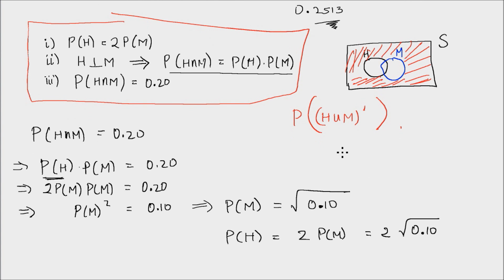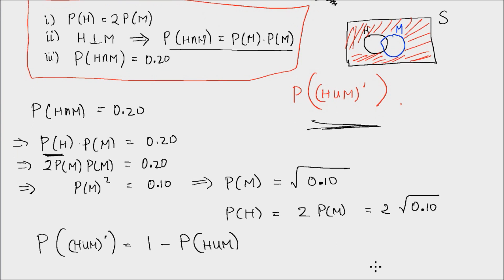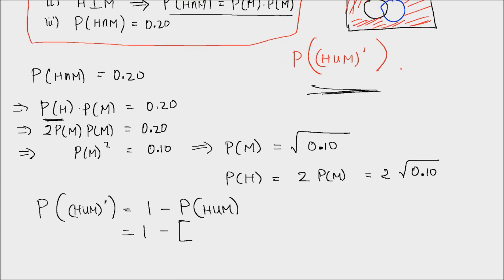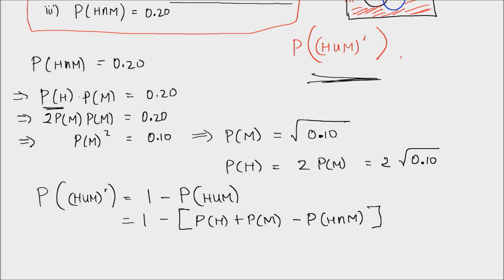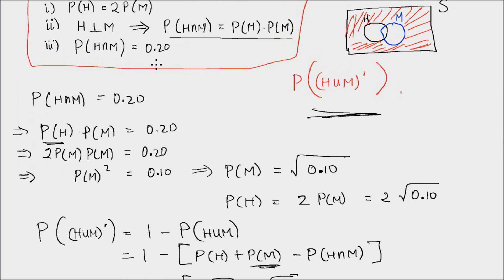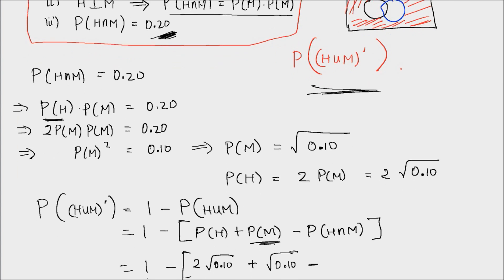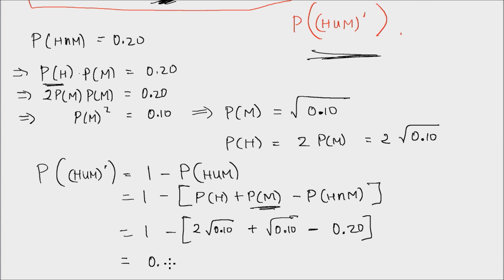Now I can go ahead and find this probability. The probability of (H ∪ M) complement is equal to 1 minus the probability of H ∪ M. Using the inclusion-exclusion principle, that gives me 1 minus [P(H) plus P(M) minus P(H ∩ M)]. I have found that P(H) is 2√0.10, P(M) is √0.10, and by number three the intersection has probability 0.20. This equals 0.2513.